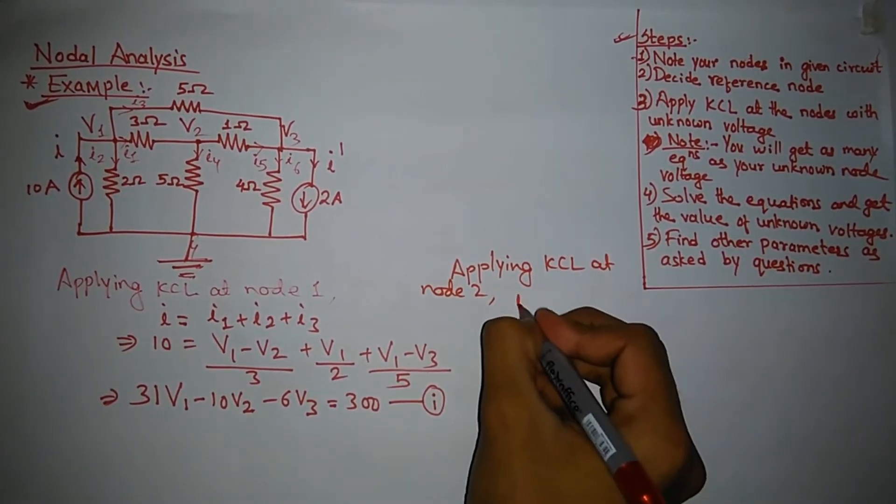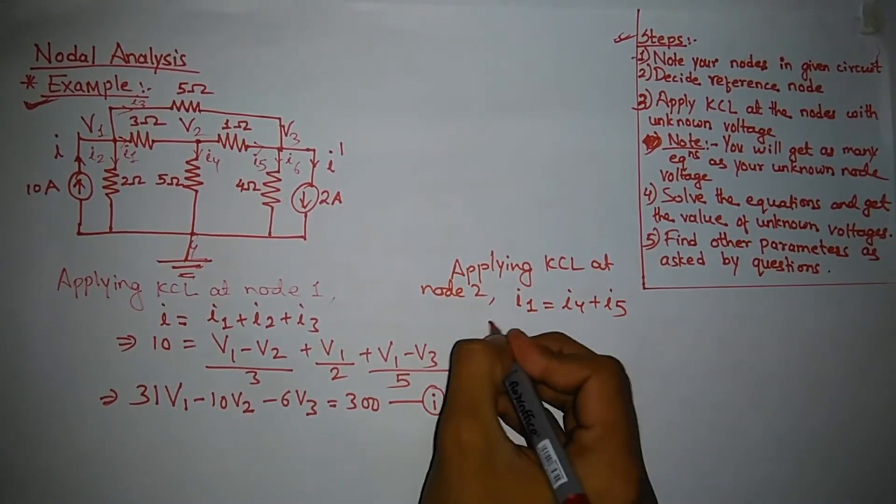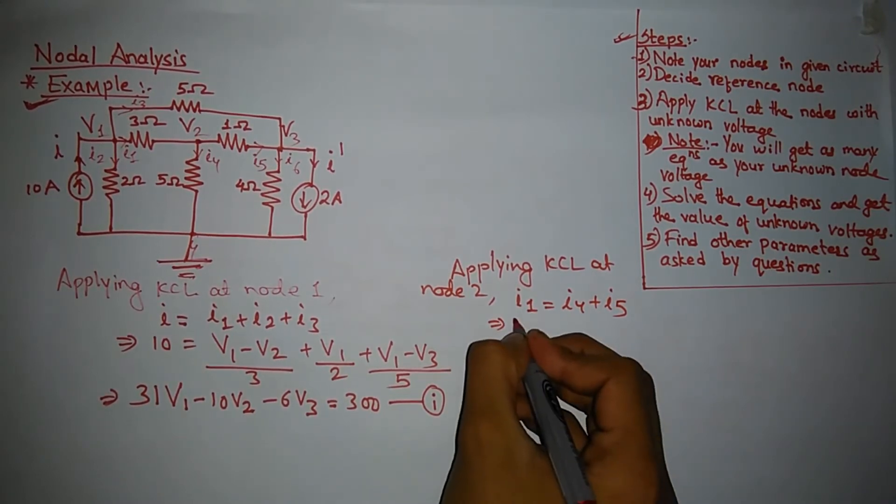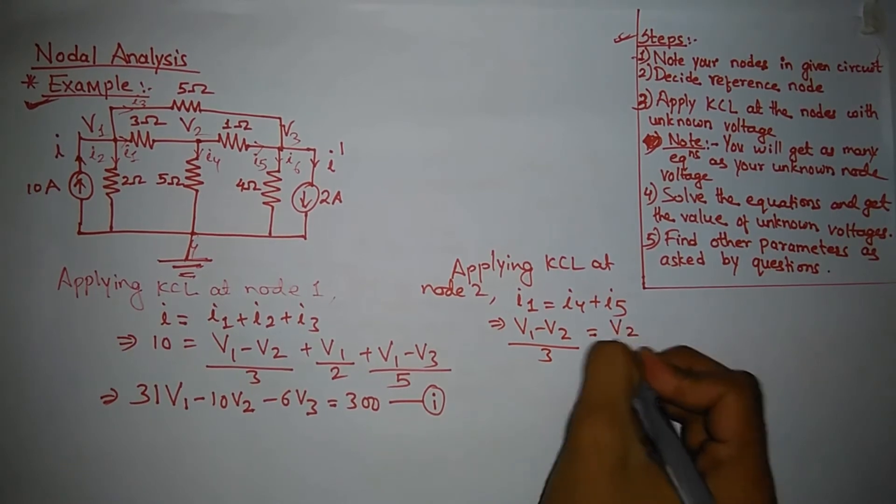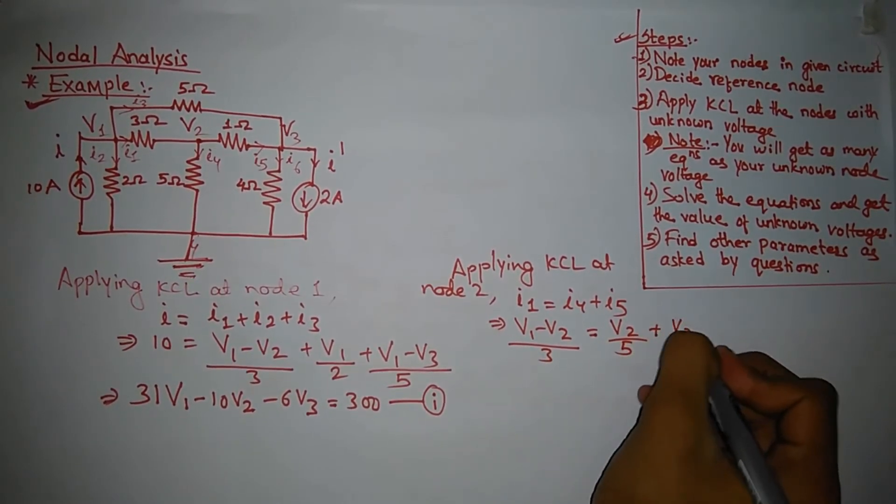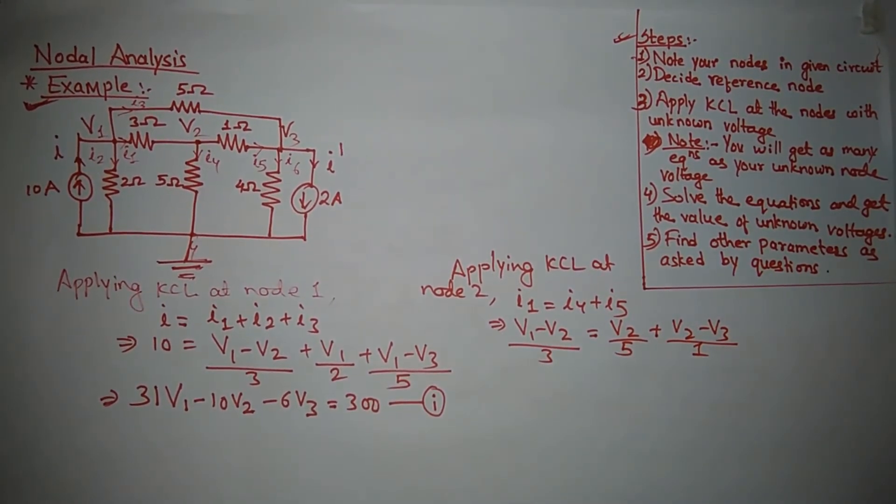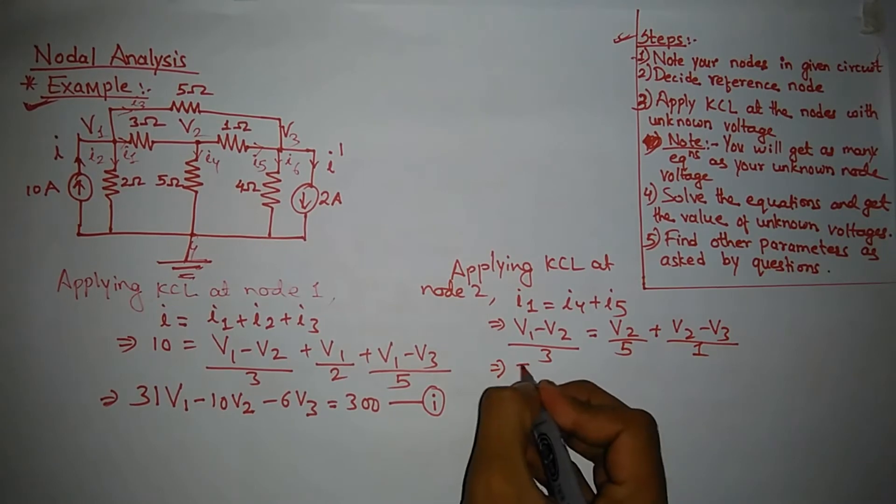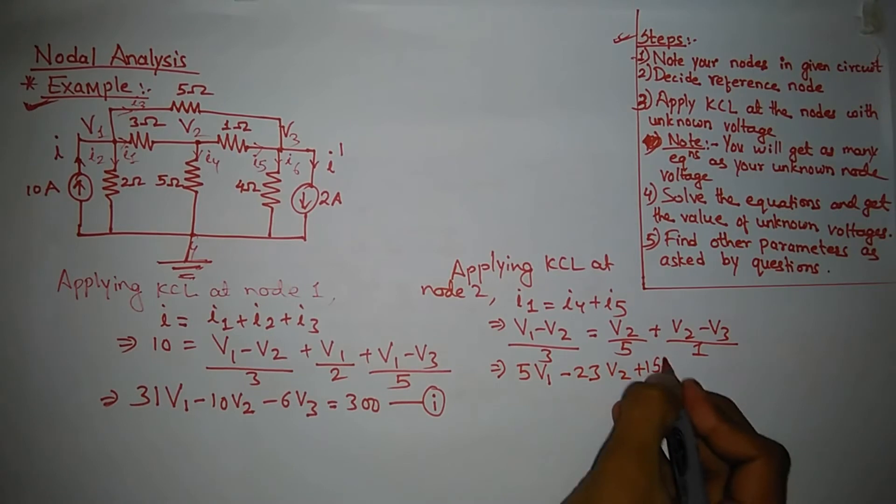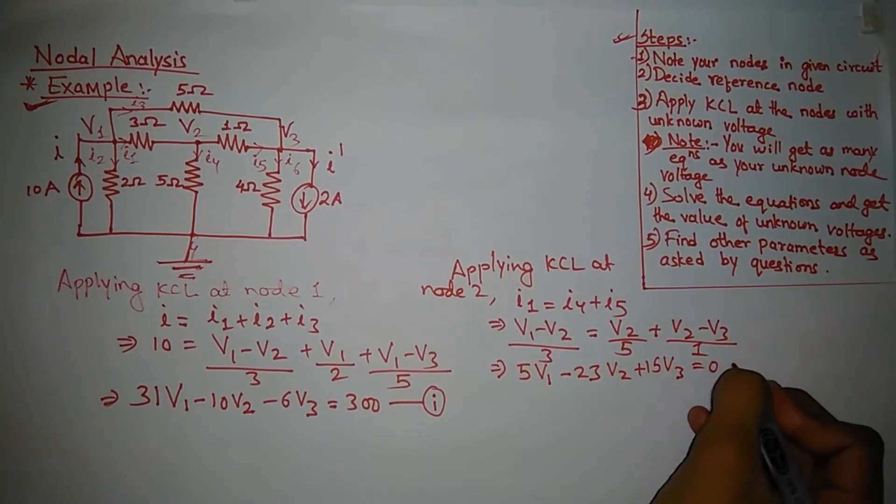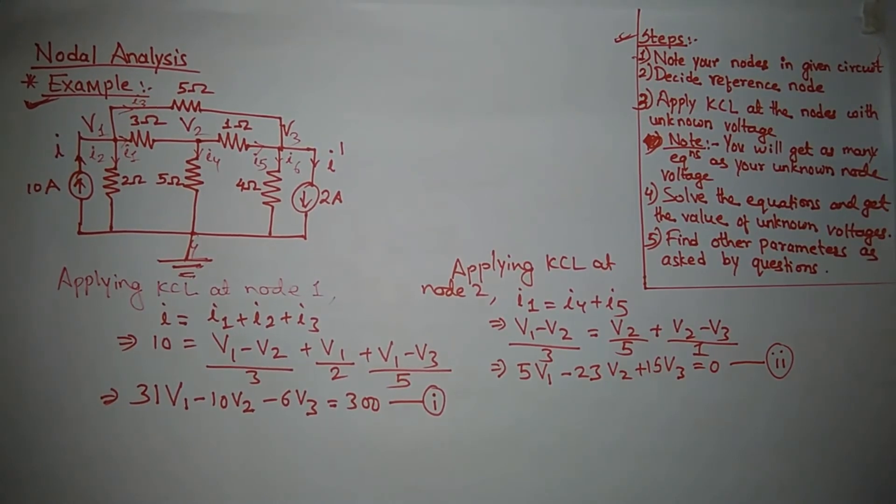Here I1 is equal to I4 plus I5. I1 is equal to V1 minus V2 upon 3, is equal to V2 upon 5 plus V2 minus V3 upon 1. On doing the mathematics we will get the equation: 5V1 minus 23V2 plus 15V3 is equal to 0. Let me call the equation as equation 2.